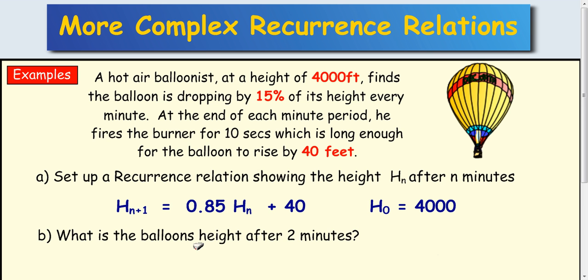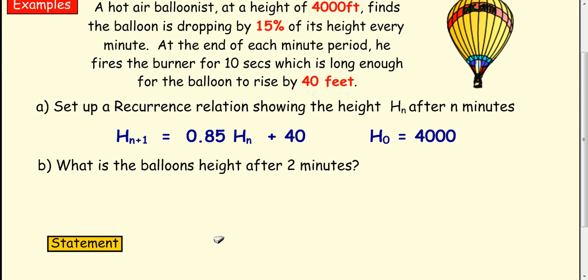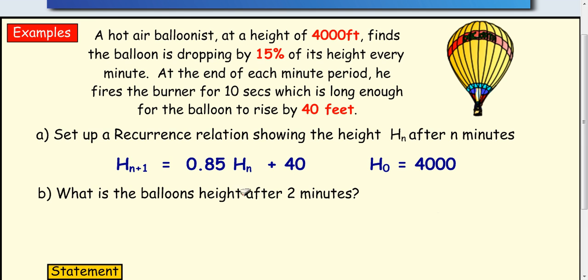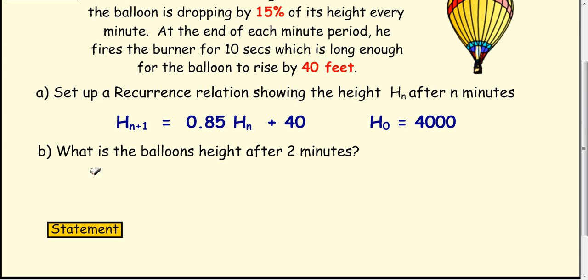Part b, what is the balloon's height after 2 minutes? Well it does this each minute so we need to run around this twice. So H₁, take your 4000, multiply by 0.85 and add 40, and we get this value.